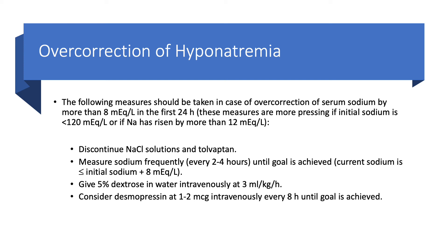For example, if we started with a sodium of 120 and overcorrected to 135, our goal is to bring it back down to 128. To achieve that, we give 5% dextrose in water at 3 ml/kg/hour — so for a 60 kg patient, about 200 ml/hour. We can also give desmopressin 1 to 2 micrograms intravenously every 8 hours until the goal is achieved. This is most relevant when correction exceeds 10 to 12 mEq/L per day or when initial sodium is below 120.